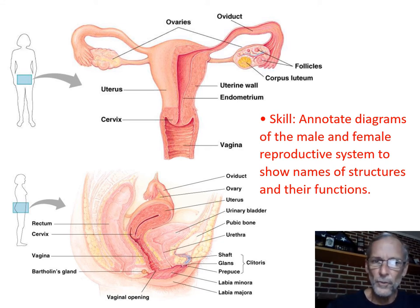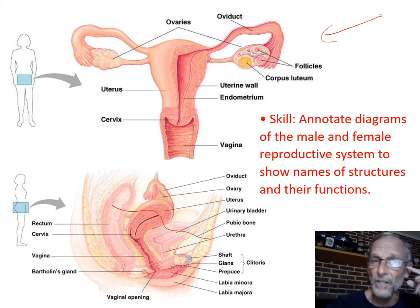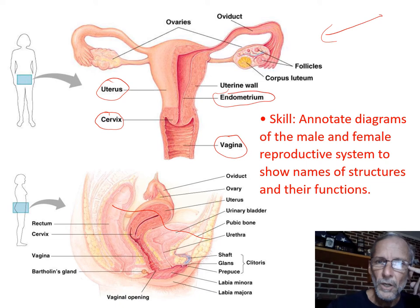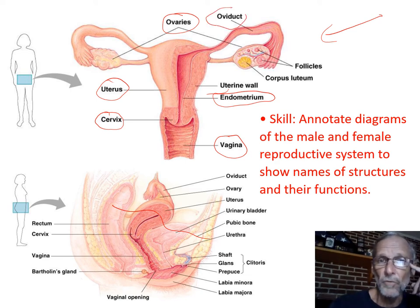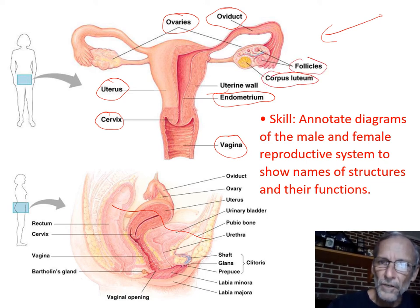Here is the female reproductive system with both front view and side view. I think it will be a front view on the test. There are fewer parts, so it's a little easier. Since the names figure in later — like when we talk about development of an embryo in the uterine wall — the ovary, the oviduct, and the fallopian tube are definitely going to come up. Inside the ovary there are also a couple of words that are definitely possible to have to label.